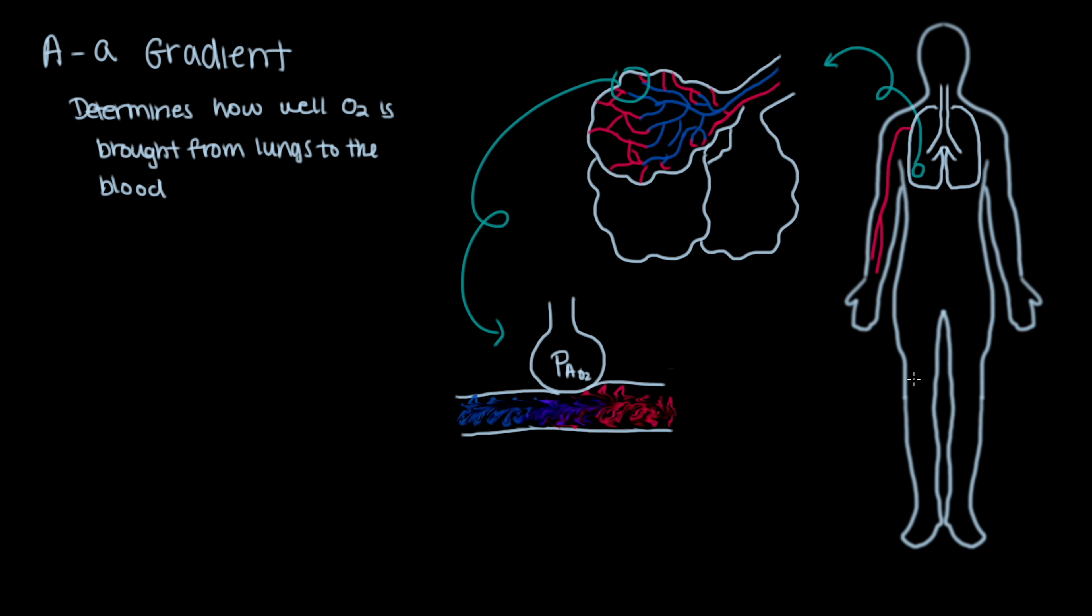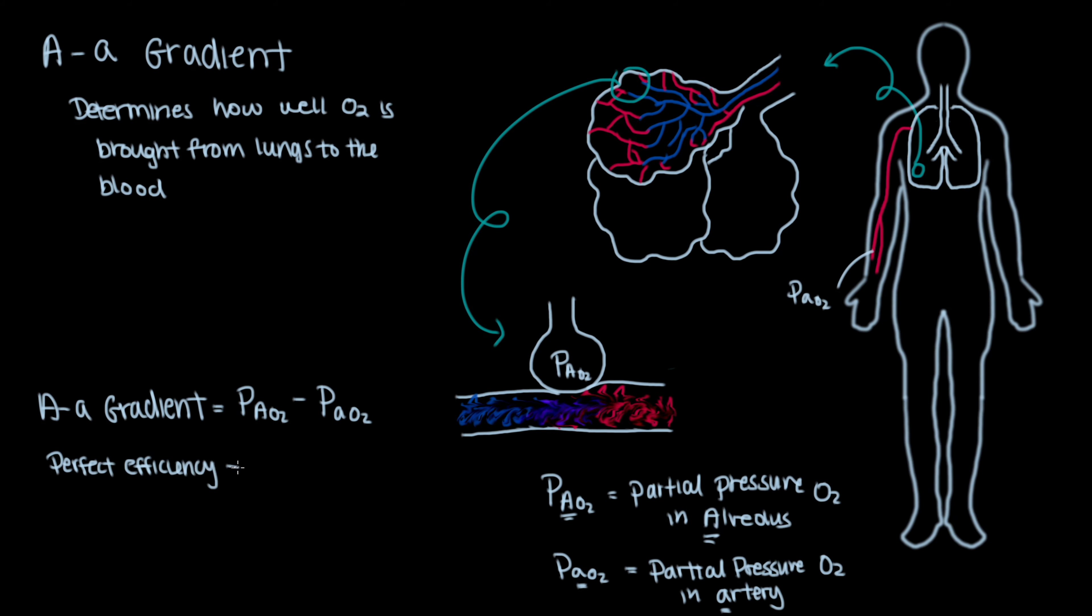The AA gradient represents the difference in the partial pressures, or the amount of oxygen, in the alveoli and the arterial system. Basically, if theoretically all the blood destined to the lungs were maximally oxygenated by the oxygen in the lungs with no inefficiencies, the difference would be zero.